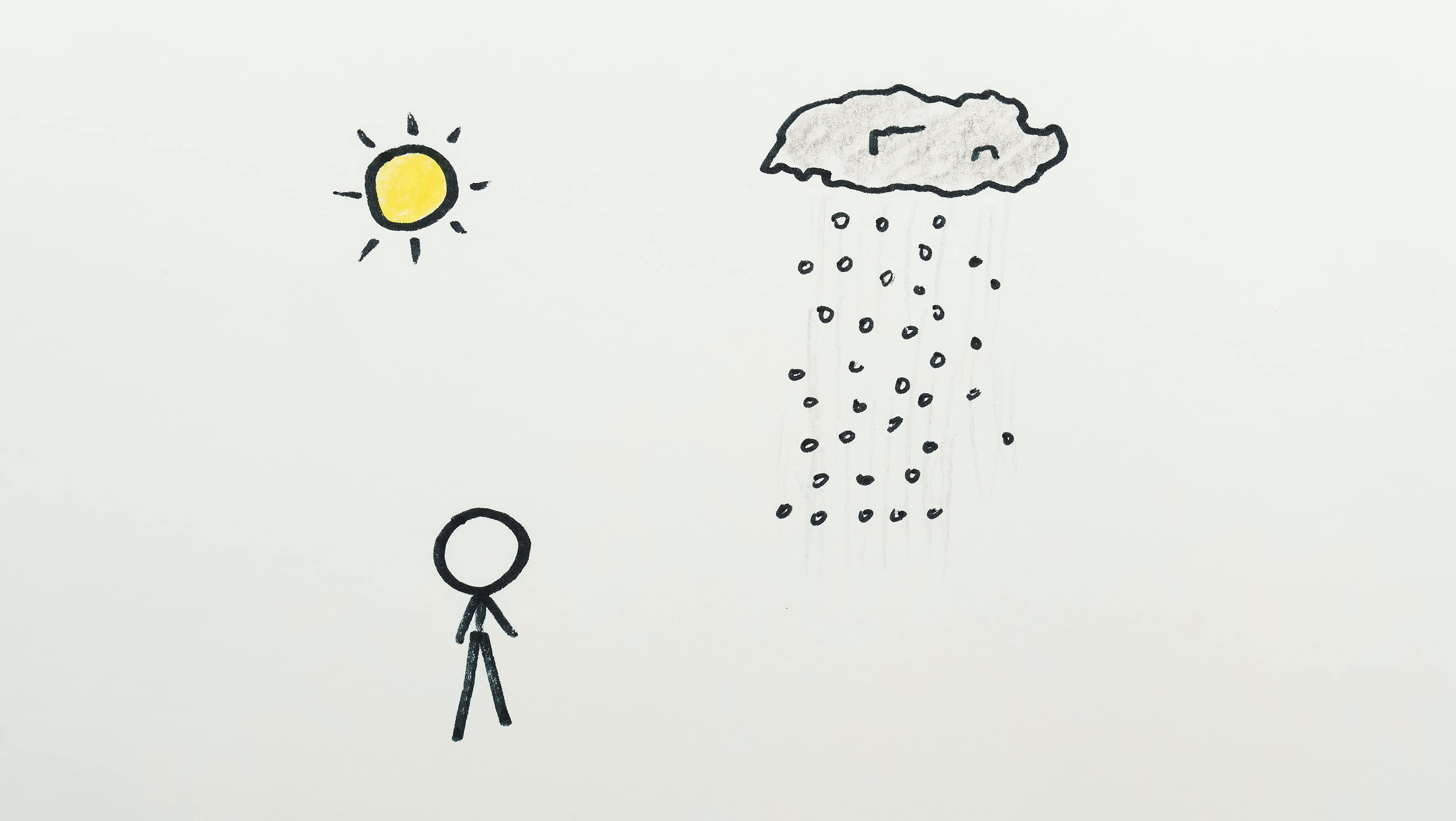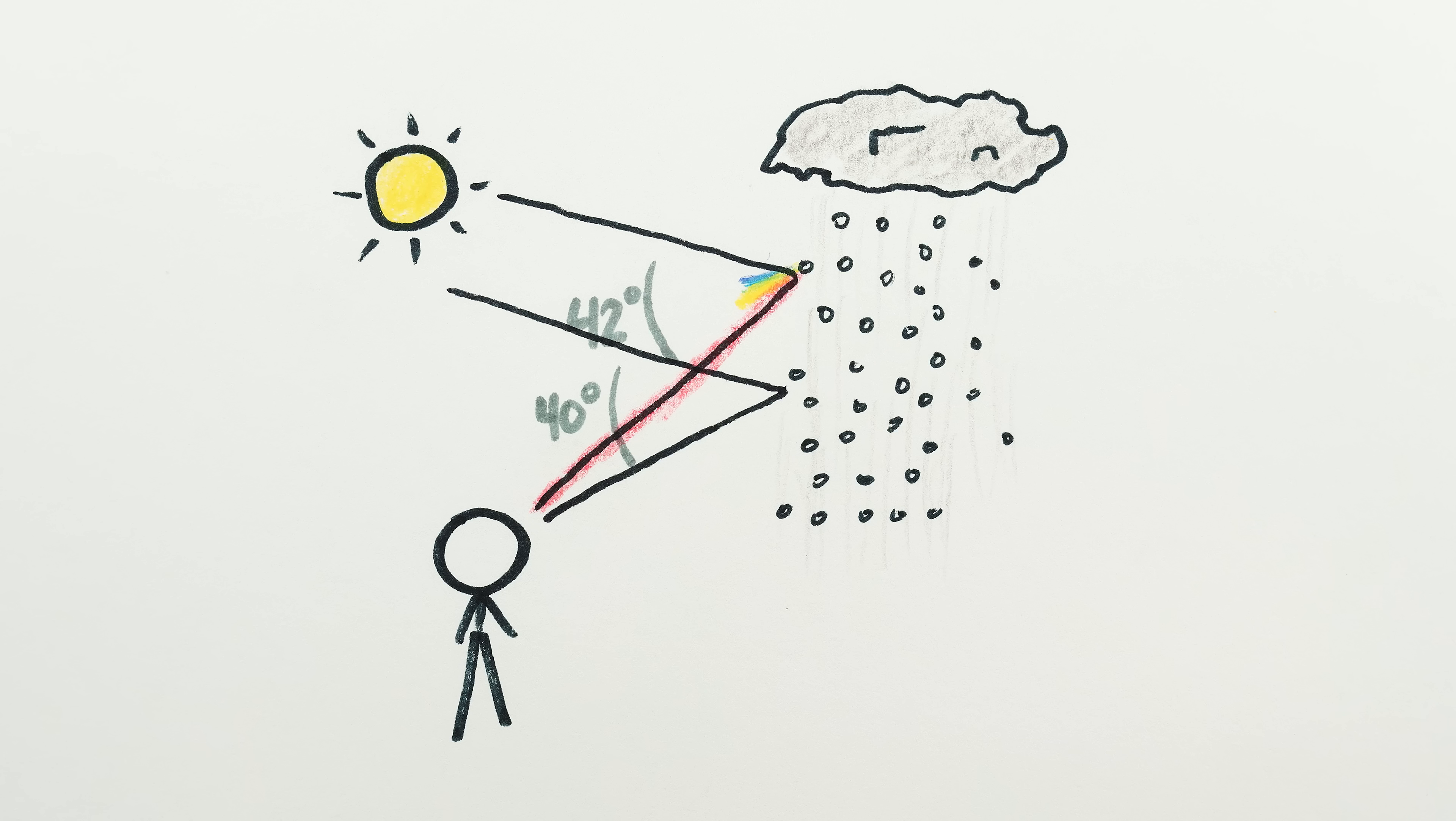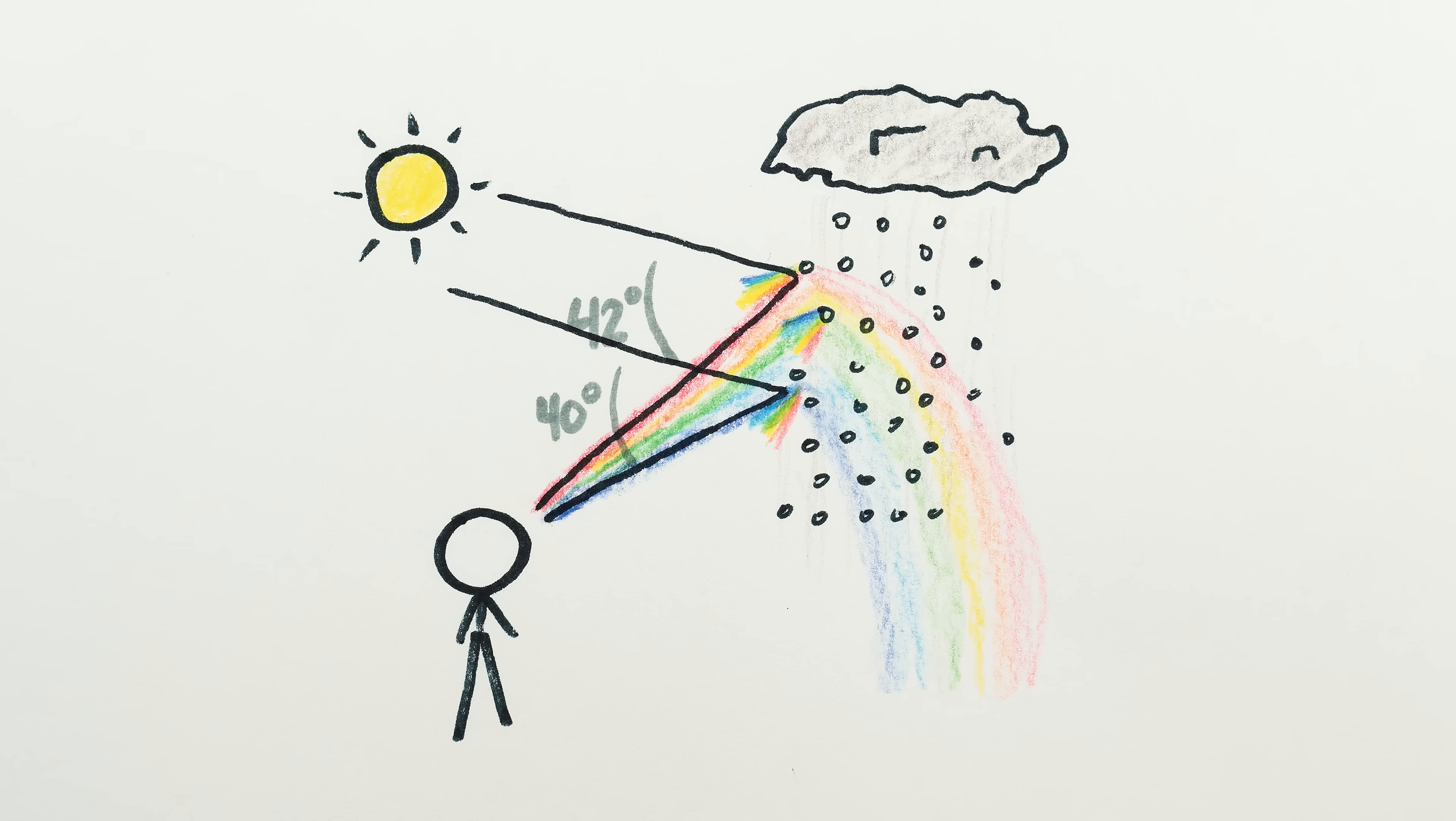So if you look up at the sky at a collection of drops, when you look up at an angle of 42 degrees relative to the direction of the sun, you'll see redder light coming from those drops, and when you look at 40 degrees relative to the sun, you'll see bluer light, with the other rainbow colors coming from drops in between. And there you have it. A nice rainbow.